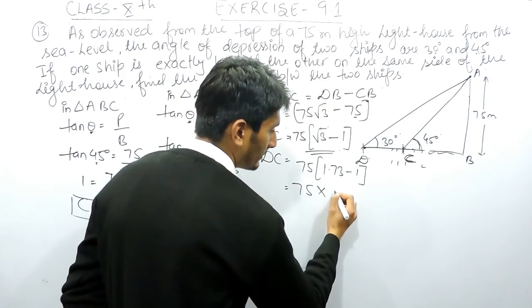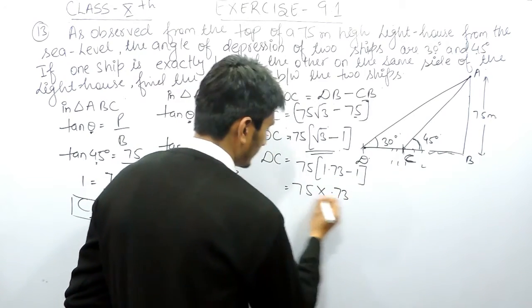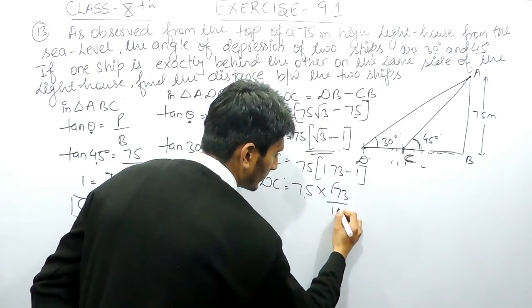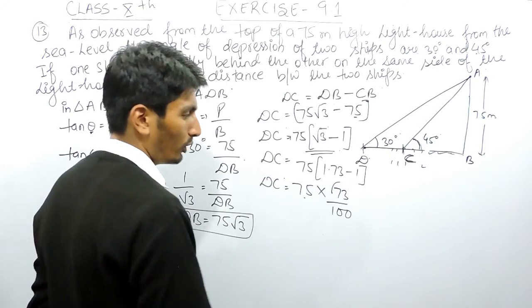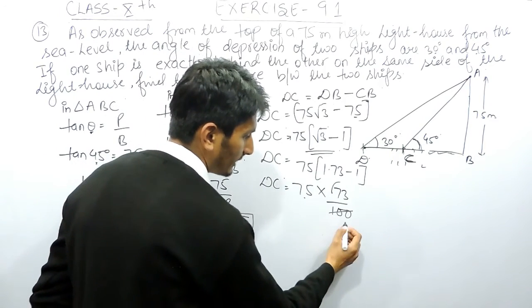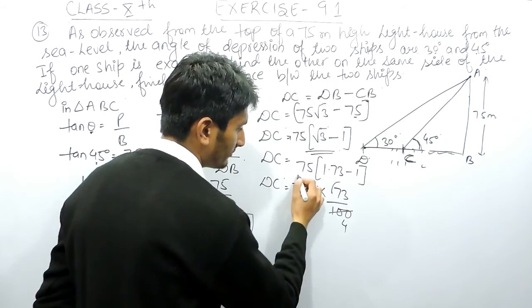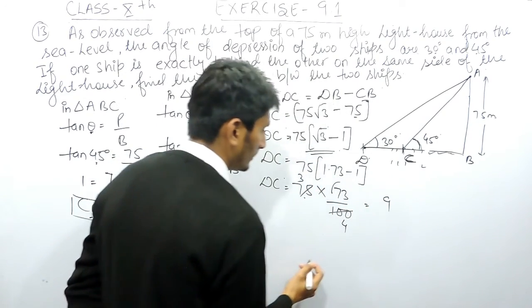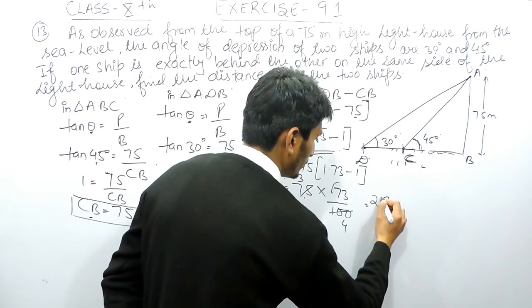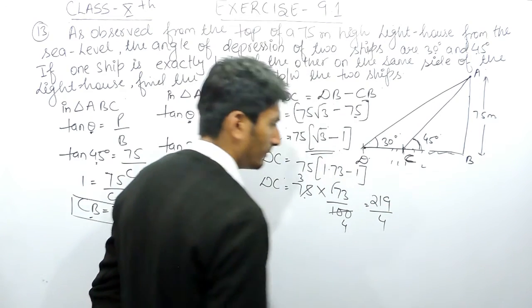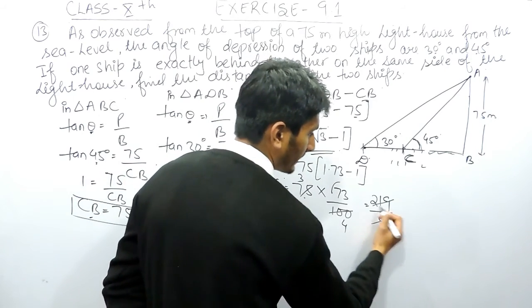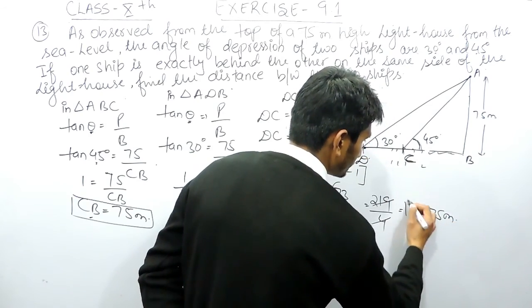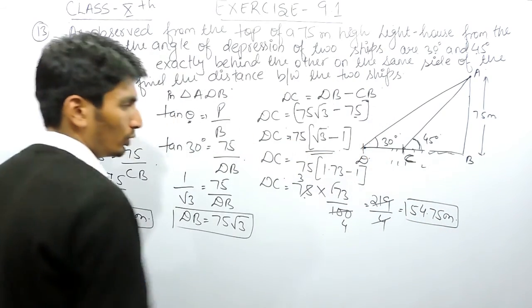The value of root 3 is 1.73, so root 3 minus 1 equals 0.73. Therefore DC equals 75 multiplied by 0.73. Simplifying: 75 times 0.73 gives 54.75 meters. So this is the answer.